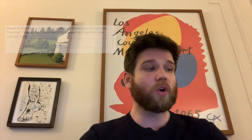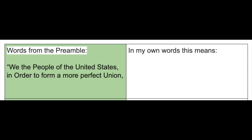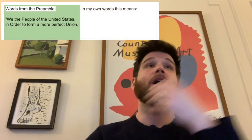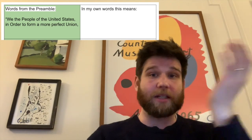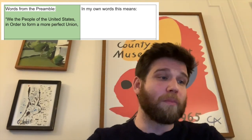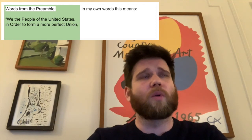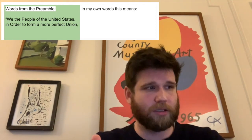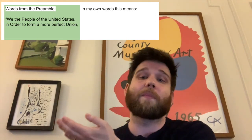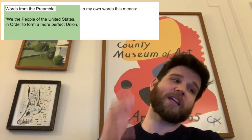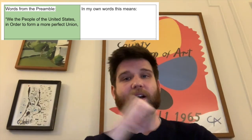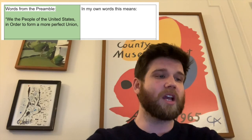Finally, for our main activity today, you are going to take each of the words from the preamble and translate it into your own. For example, let's do this first one together. It says: 'We the people of the United States, in order to form a more perfect union.' So we're going to put that into our own words. 'We the people of the United States' — I'm just going to say 'we Americans' or 'the people in America.' 'In order to form a more perfect union' — I would say, 'in order to make the best government we can.' So that's what they're saying there, and I'm going to move it from the green box into the white box and put it in my own words. That is what we are going to do.